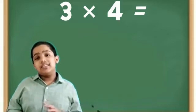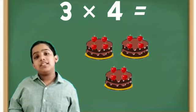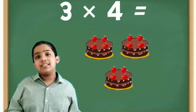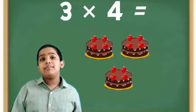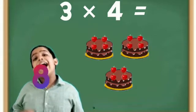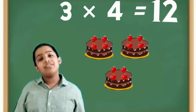Now 3 is the number of groups and 4 is the number of objects in each group. I wonder if we still get the same answer as 12. Let's do that but by skip counting by 4: 4, 8 and 12. Wow! We get the same answer as 12.